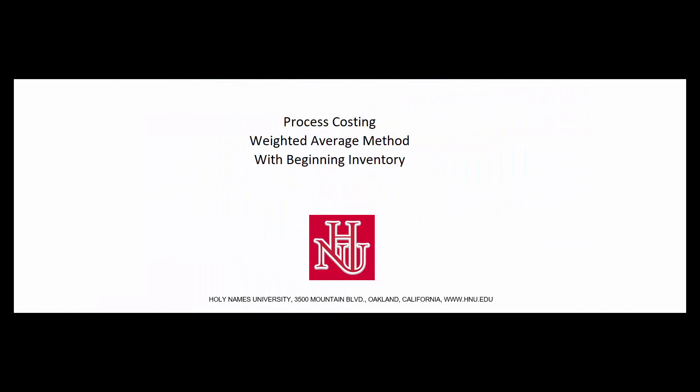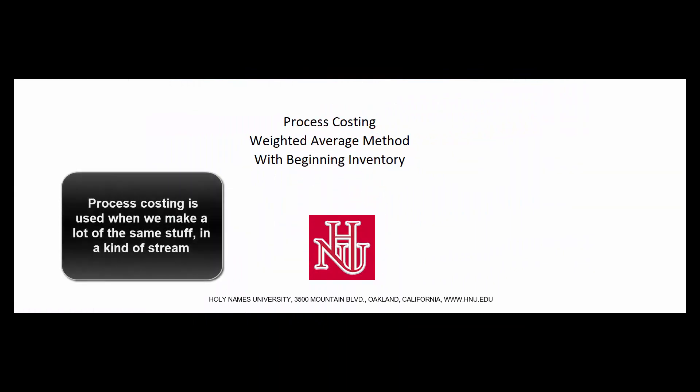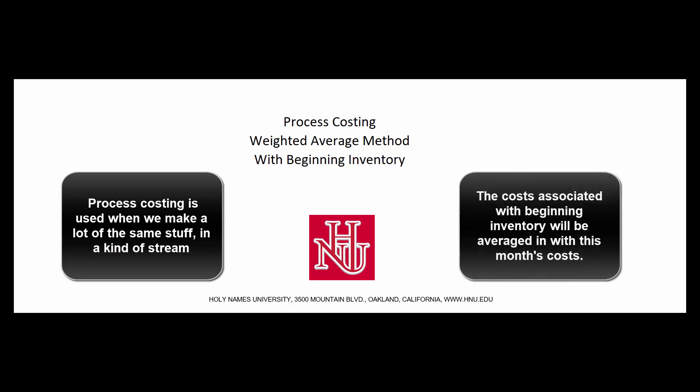Let's tackle a process costing problem using the weighted average method but with beginning inventory. The odd part about the weighted average method is that the costs associated with beginning inventory will be averaged in with our costs this month, but the beginning inventory will be ignored as far as equivalent units worth of work goes. This is the weighted average method — it's the most common use. Let's take a run at one.